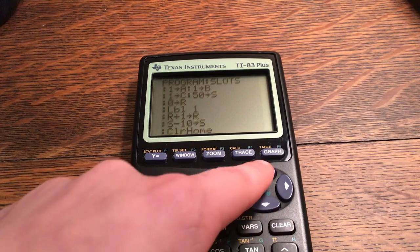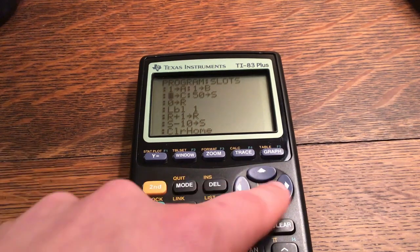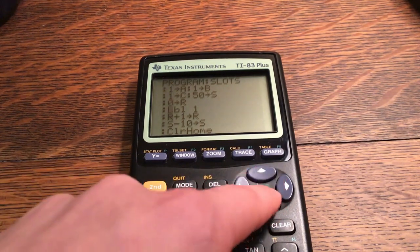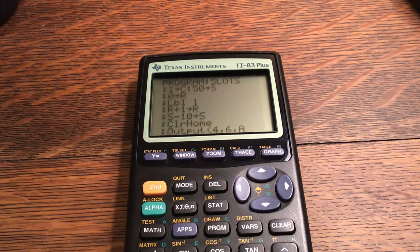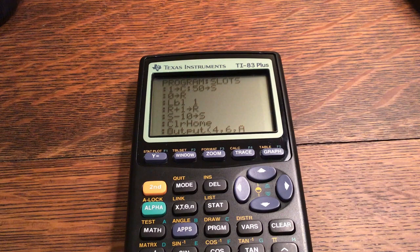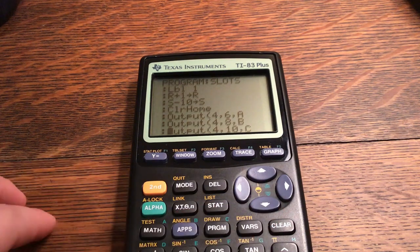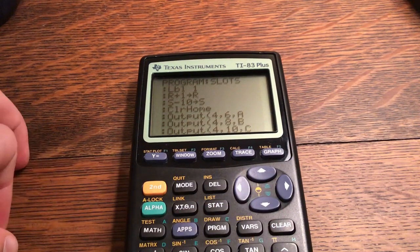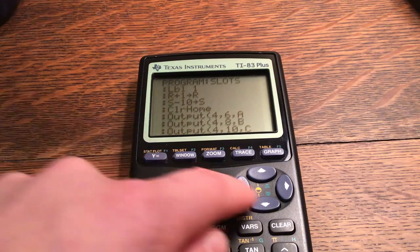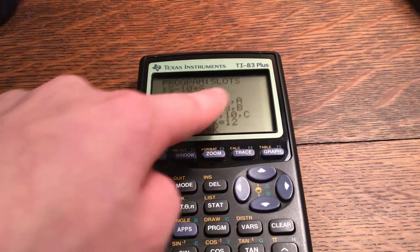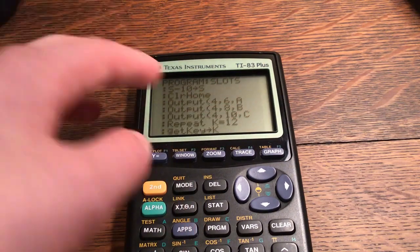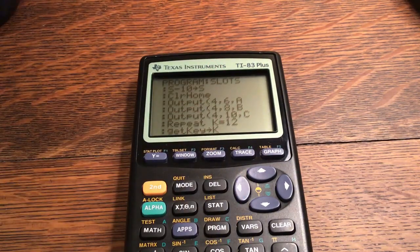One stored to C, 50 stored to S, zero stored to R, label one, R plus one stored to R, S minus 10 stored to S. Clear home. Output four comma six comma A. Output four comma eight comma B. Output four comma ten comma C. So this is why all three of them are up there, because I like having all three up there.